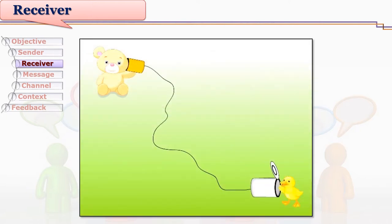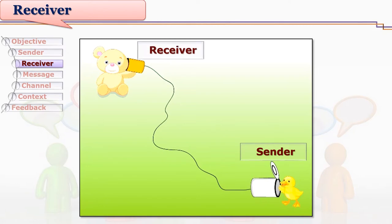Do you like this picture? Here, who is the receiver? Teddy is the receiver — receiver is listening to the message. The receiver is the person who receives a message; it may be a person, an animal, a system, or a group of persons. Understanding the message is their responsibility.